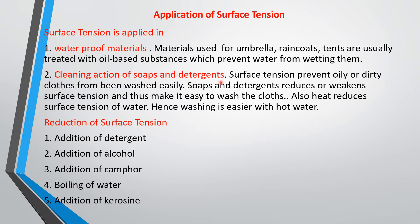The cleaning action of soaps and detergents is another application. Surface tension prevents oily or dirty clothes from being washed easily. Soaps and detergents reduce or weaken surface tension, making it easy to wash clothes. Also, heat reduces the surface tension of water, so washing is easier with hot water. If you use hot water, you'll find it easier to wash very dirty clothes.